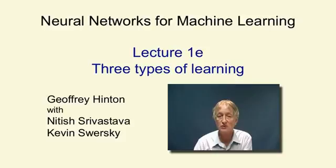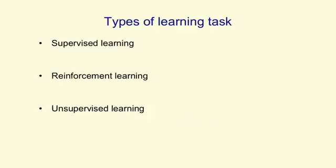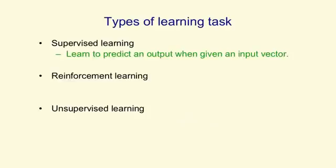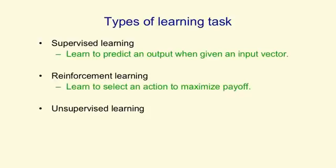Learning can be divided into three broad groups of algorithms. In supervised learning, you're trying to predict an output when given an input vector, so it's fairly clear what the point of supervised learning is. In reinforcement learning, you're trying to select actions or sequences of actions to maximise the rewards you get.